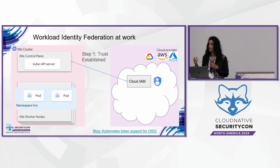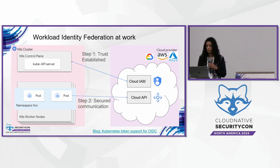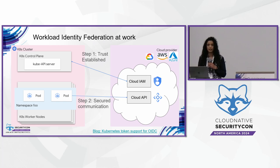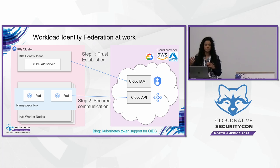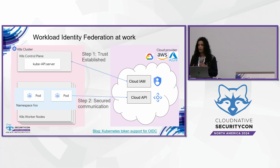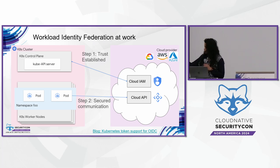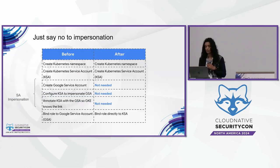First, trust is established between the identity provider and the relying party. From there, communication is established so the pod can reach the cloud API service and leverage that provided token. By the way, this cloud API service — as long as it supports OpenID Connect — could be any service or application with that type of support. There's a good blog linked in the slides with more details on OIDC support for service tokens.